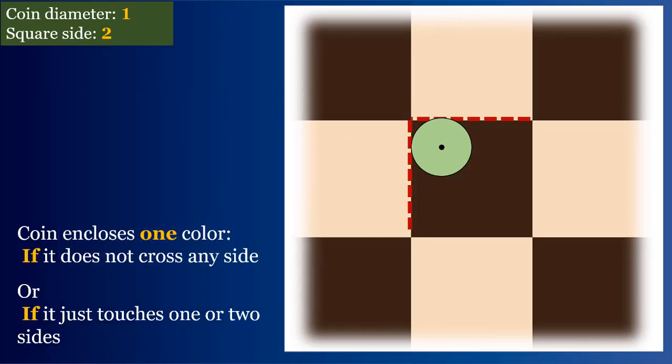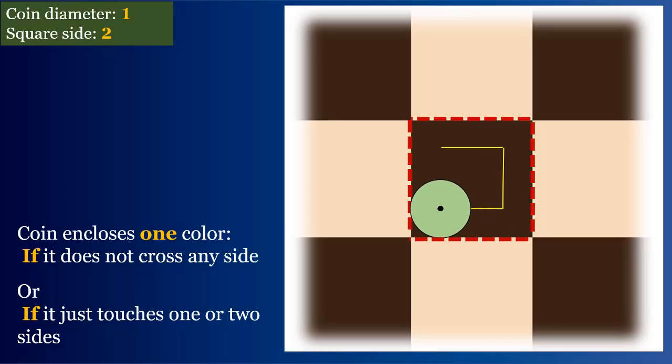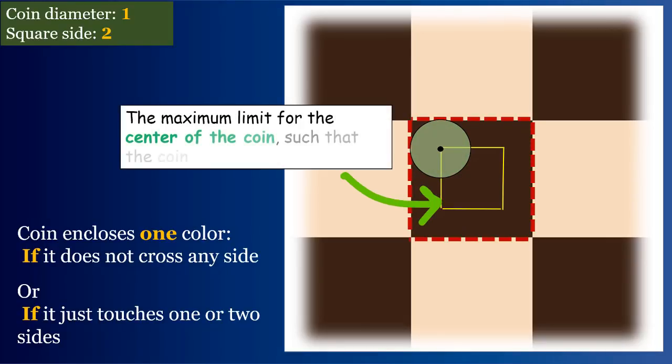So, in this position where the coin just touches the side but doesn't cross it, if we traverse the coin along all four sides and mark the path traversed by the center of the coin, we will get the boundary limit for the coin's center in the form of a smaller inner square,